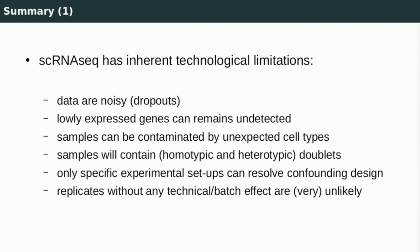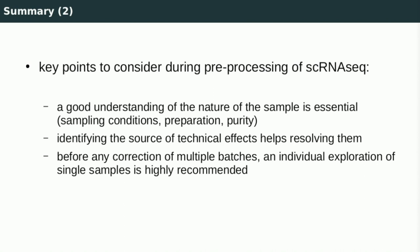In summary, there are inherent technical limitations in scRNA-seq: you will have many dropouts and not detecting a gene does not mean it is unexpressed; samples can be contaminated by unexpected cell types; doublets can occur; and technical batch effects between replicates are very unlikely to be absent. During the process, it is important to understand the nature of sample preparation to retroengineer potential batch effects and correct them accordingly. Before applying any batch correction, always process each sample individually first to understand the stress and limits applied to each sample.